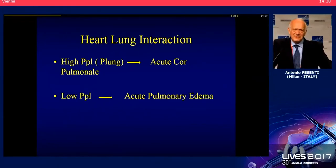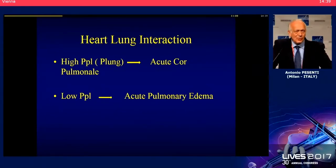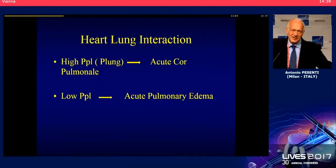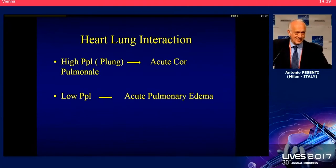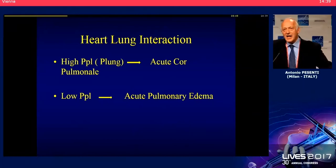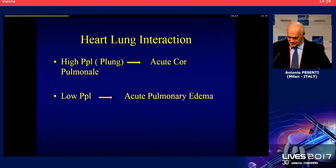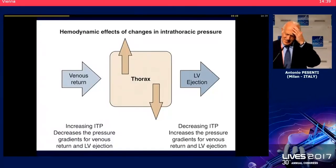A couple of very simple concepts. High pleural pressure causes acute cor pulmonale in its extremes. Low pleural pressure causes acute pulmonary edema. So, high pleural pressure is bad for the right heart. Low pleural pressure is bad for the left heart. Low pleural pressure is also bad for the right heart — you have seen this drawing already.